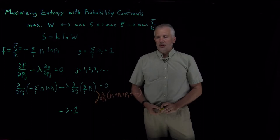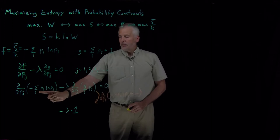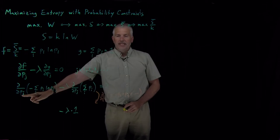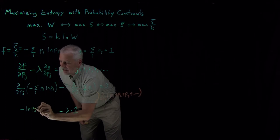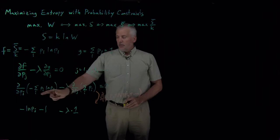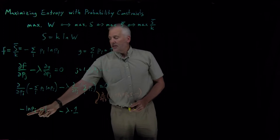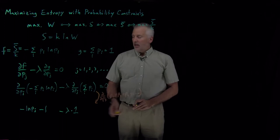Likewise, for the first term, the derivative with respect to Pj of this term, the first term P1 log P1, the second term P2 log P2, only one of those terms matters, and it's the one with Pj in it, and that's going to give us minus log Pj minus 1, where that's the same derivative we've taken a number of times now. The product rule tells us the derivative of P times log P gives us this, and P times the derivative of log P gives us this, both with a negative sign. That's after taking the derivatives.